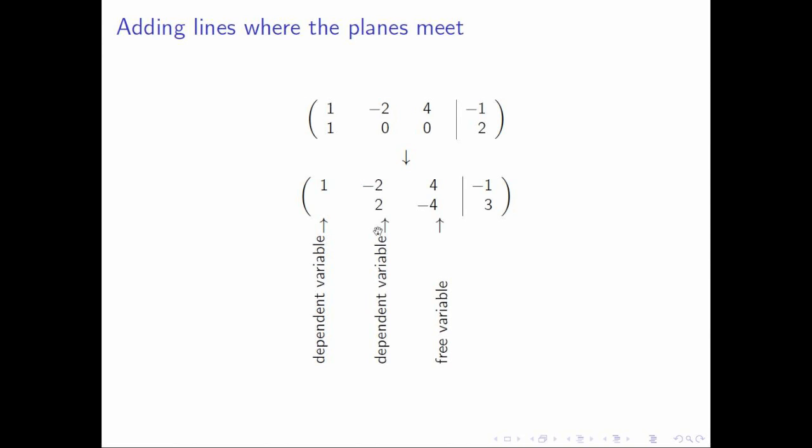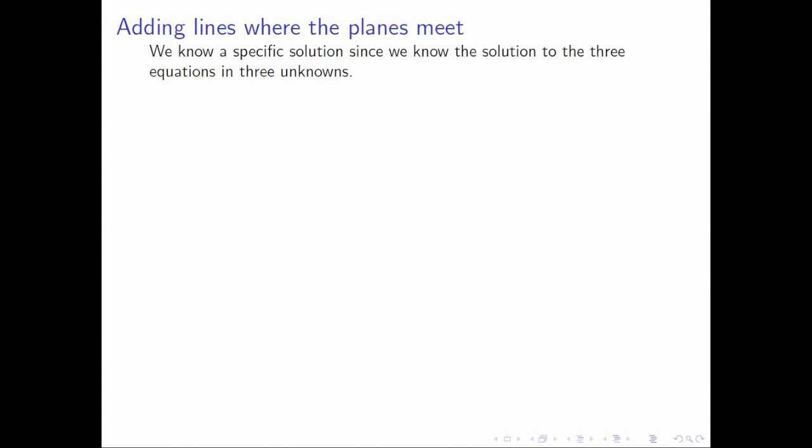You transform it into row echelon form. That then allows you to identify one free variable and two dependent variables. And then you would like to find a specific solution. But actually, we don't need to do any computations to find the specific solution because we know that the point that satisfies all three equations also satisfies both of these equations. And therefore, we know that that is a specific solution to the problem.